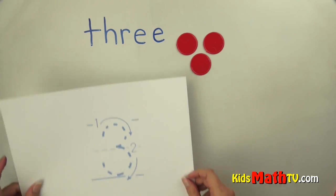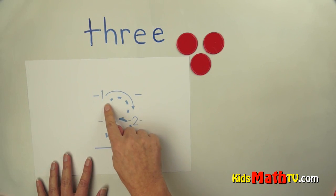To write the number three we start up here, we go up and around to the middle and then around again to the bottom.